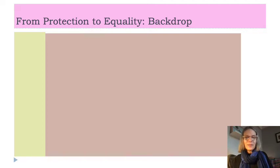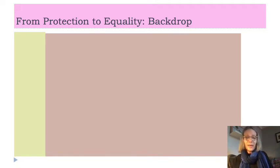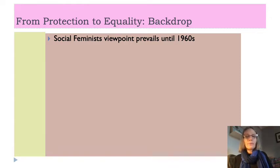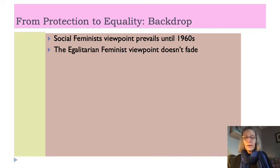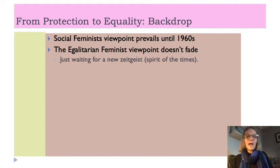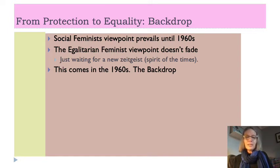While the social feminist viewpoint prevailed until the 1960s, the egalitarian feminist viewpoint never faded away — it just didn't have the same political and social power. Egalitarian feminists were basically waiting for a shift in zeitgeist — a shift in the spirit of the times. Starting in the 1960s, the egalitarian feminist viewpoint gained much more traction, due to changes within the economy, society, and ideas raised during the civil rights movement.